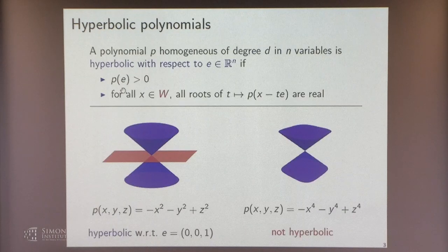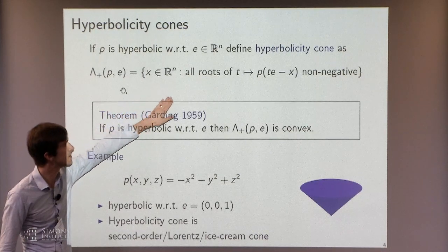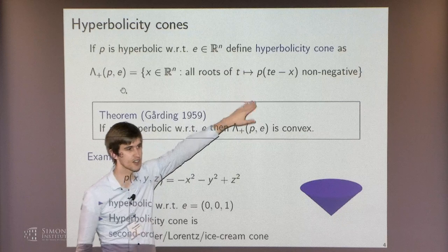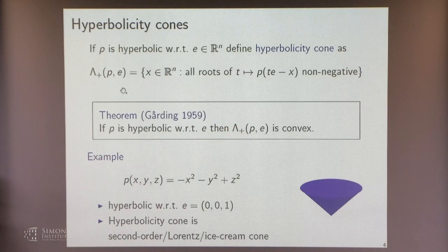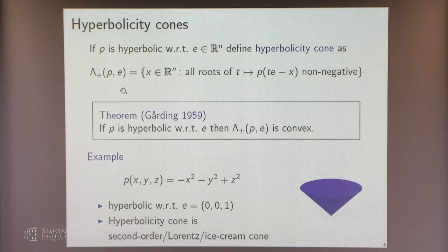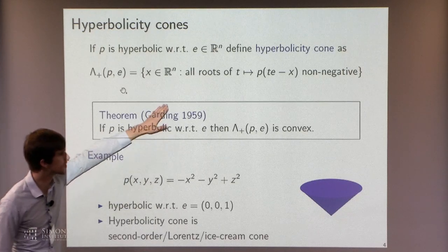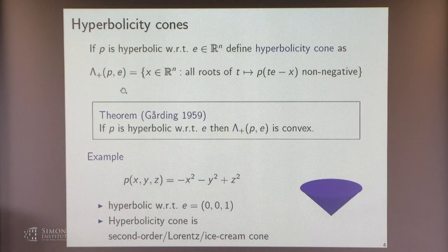These are hyperbolic polynomials. The reason they're interesting from an optimization perspective is that there's a natural convex object associated with a hyperbolic polynomial: what we call the hyperbolicity cone. I can define a cone by taking all points in R^n so that when I look at the roots of my polynomial along this line, all of these real roots are non-negative. A foundational result—dating from the PDE literature in the 1950s—is that this is a closed convex cone. For a particular example, insisting on non-negative roots gives the second-order cone, very familiar in optimization.